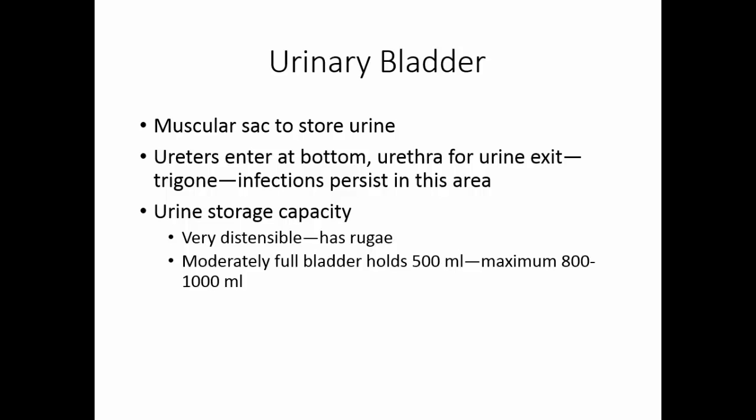A moderately full bladder usually holds about 500 milliliters of urine — that's about a pint. Maximum capacity is somewhere between 800 and 1,000 milliliters, and 1,000 milliliters is close to a quart.